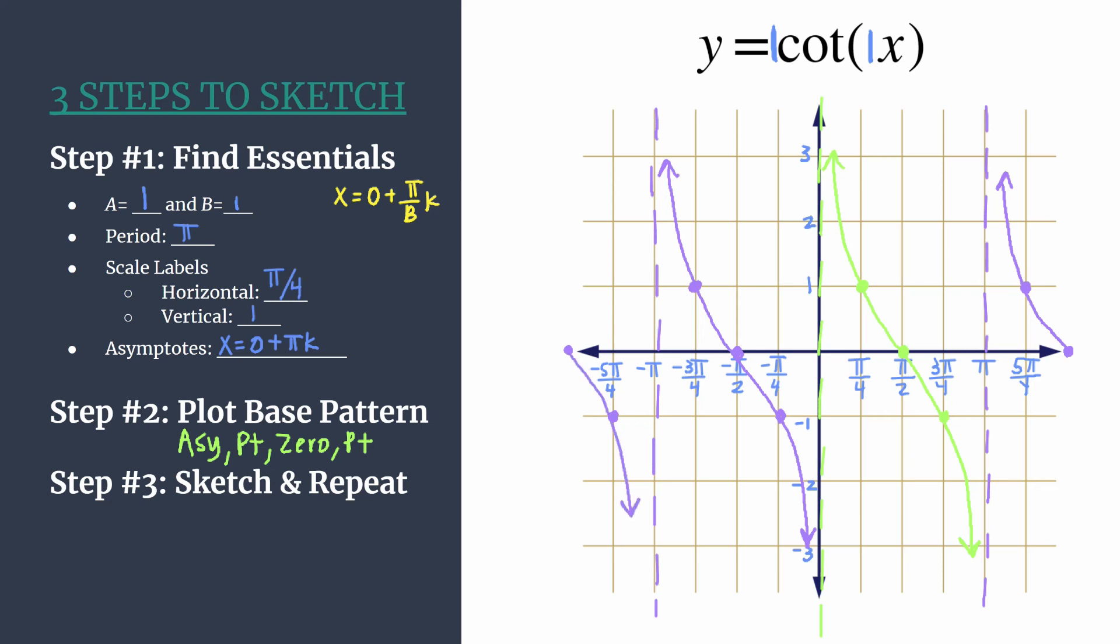Alright. So here we have three full cycles of y equals cotangent x. And hopefully this helped you get a better understanding of how to use the three steps to sketch method for unshifted cotangent graphs. If you understand the steps with this, you should be able to graph any unshifted cotangent graph. Be sure to check the link in the video description. I will post a lot more work examples of cotangent graphs. So check those out. And thanks for watching.